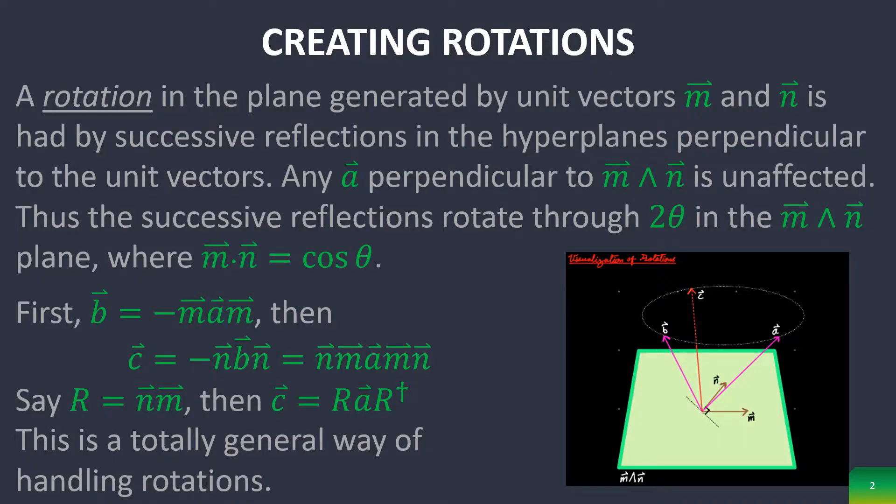Rotations are generated by two unit vectors by successively reflecting a vector to the planes that are perpendicular to those unit vectors. As is seen in this diagram, you first reflect A to the plane perpendicular to M and then perpendicular to N to get to the vector C.